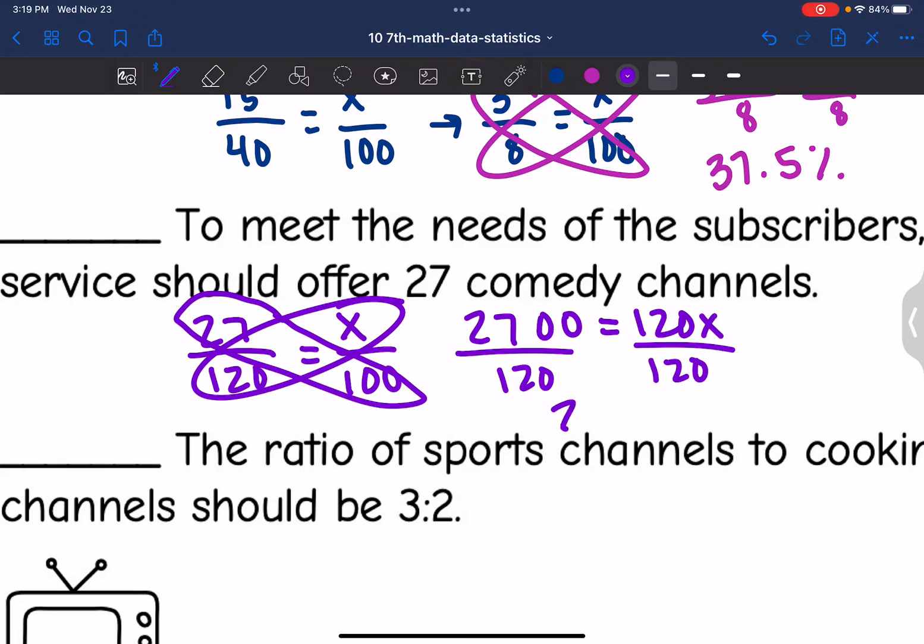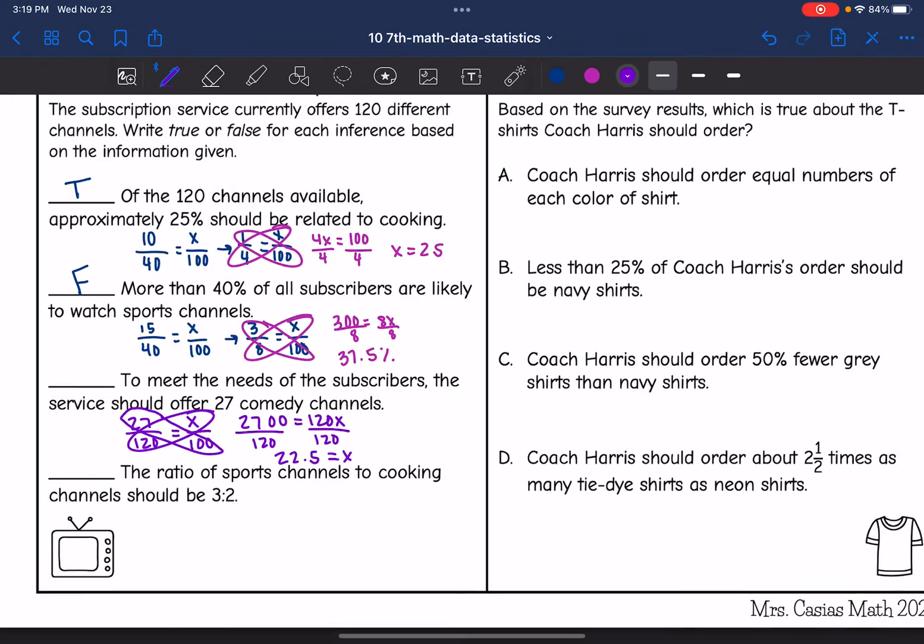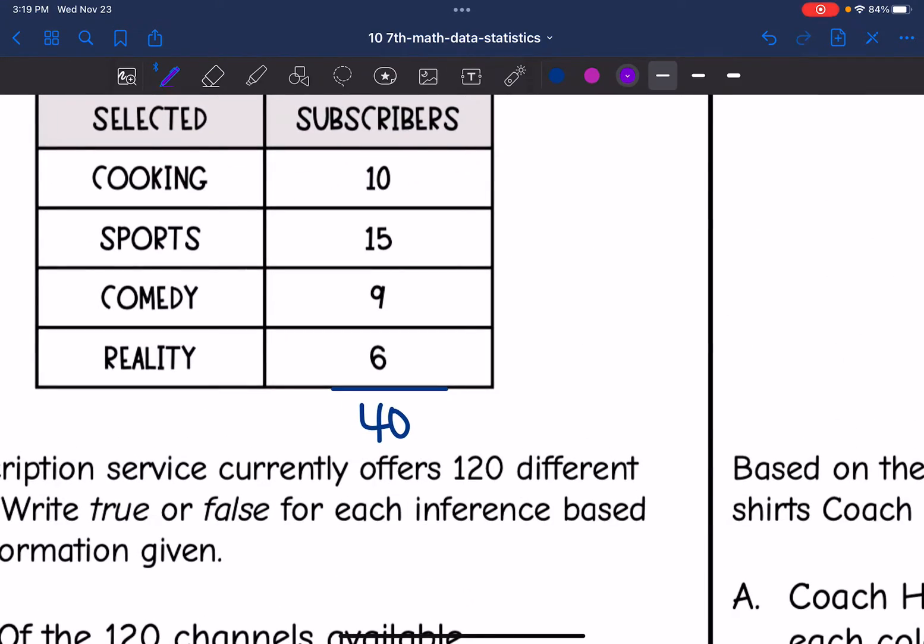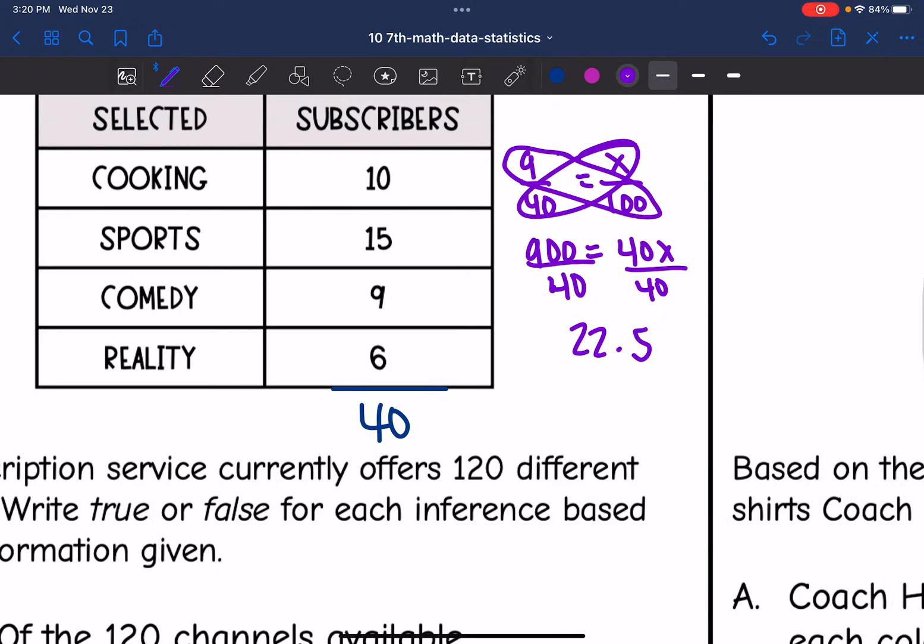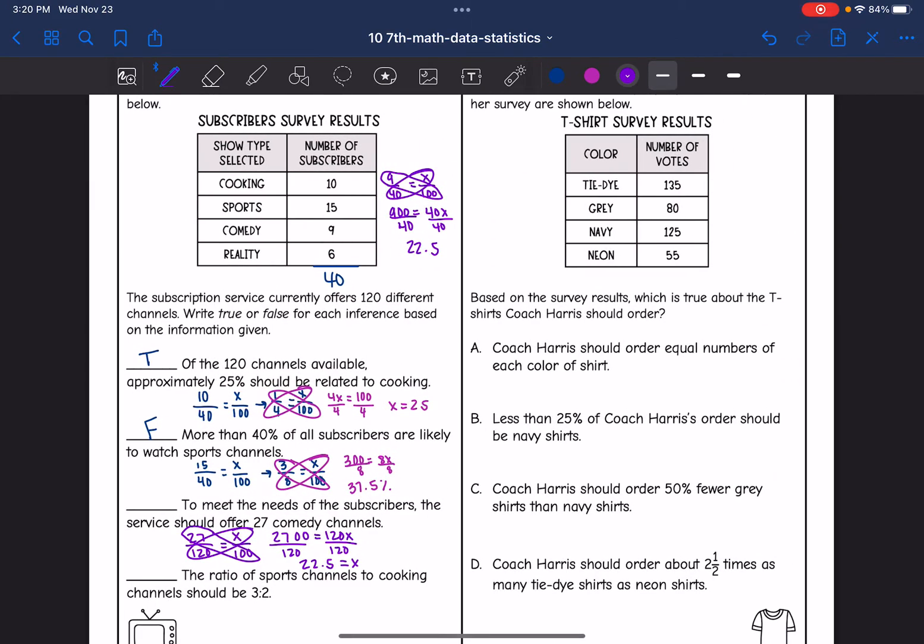So 22.5% of the channels would be comedy channels. Let's see if that matches what they surveyed, which would have been 9 out of 40. So I'm going to do 9 out of 40 and see what percent that is. So 9 times 100 is 900. And 40 times x is 40x. And then I would divide by 40. And 900 divided by 40 is 22.5. So that matches perfectly. Both of the percentages based on their survey and then in their channels would be 22.5%. So I would say that is true.